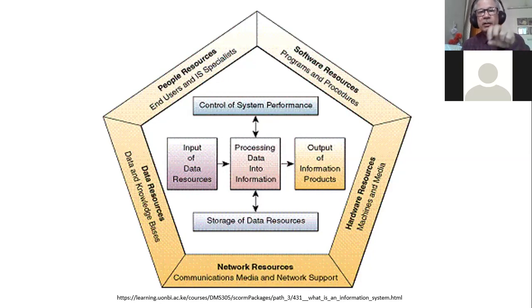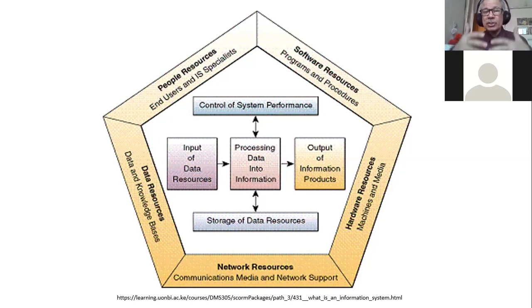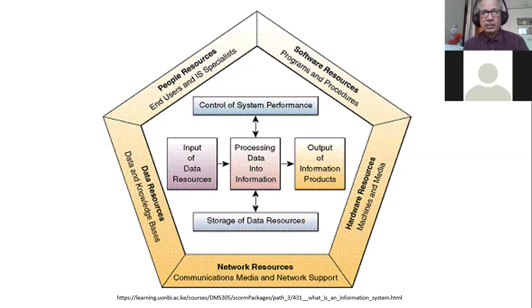These are the important components of any information system. We need certain people to manage, create, run, and use that information system. We need certain software to work on the machine — the hardware. We need network resources to connect the communication media. For example, using Zoom now, we are connected with each other. So those things are needed.